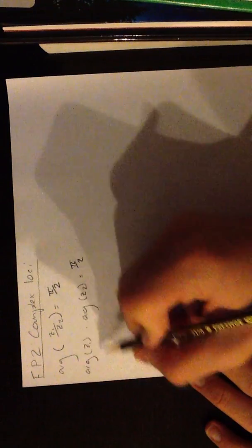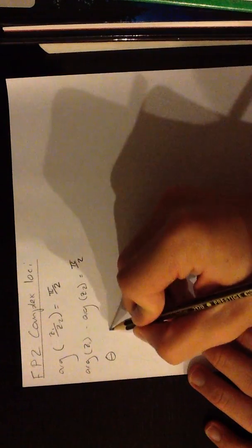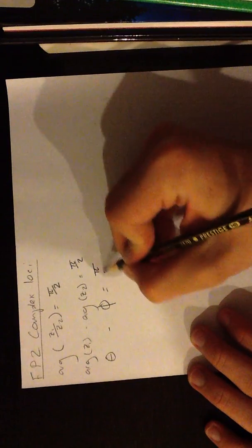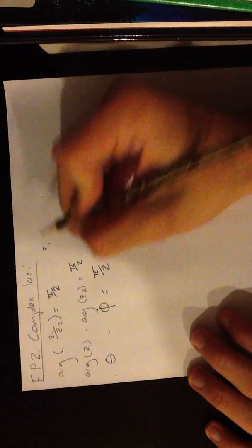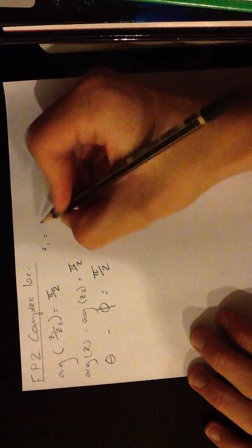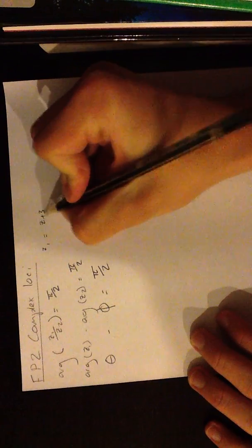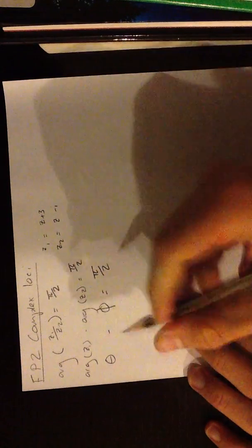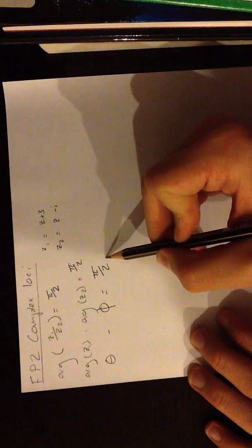Then you take this and you replace it with a variable — we'll call it theta because it's an angle, and this one a different one, phi. Let me just define z1 and z2: z plus 3, and z minus i. We're going to say theta minus phi is equal to pi over 2.